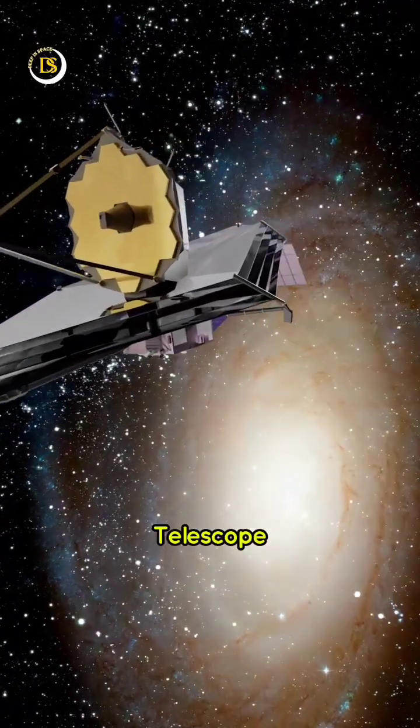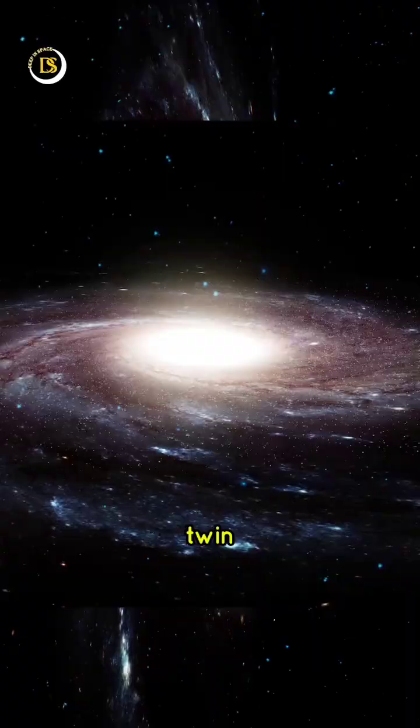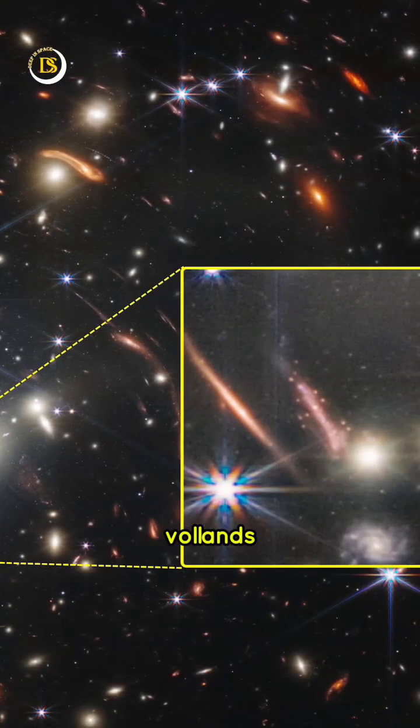The James Webb Space Telescope has unearthed a stunning secret, the Milky Way's long-lost twin, the Sparkler, hiding 9 billion light-years away in the constellation Volans.